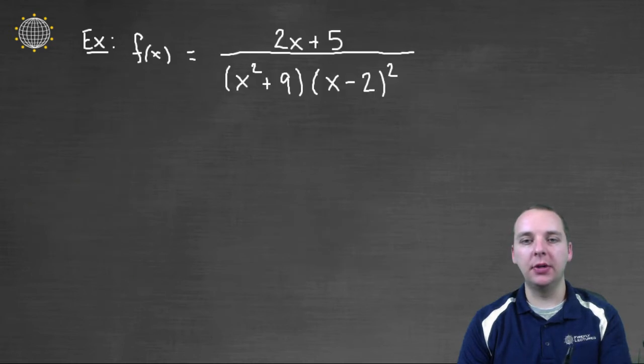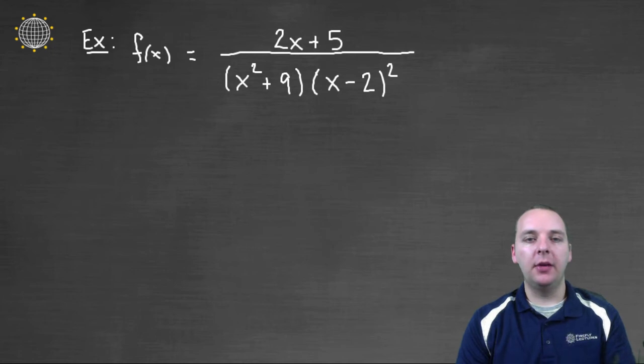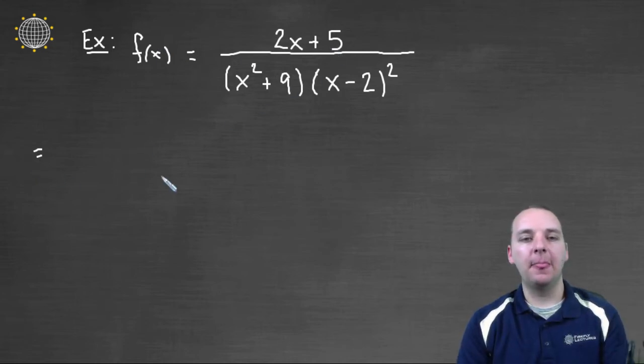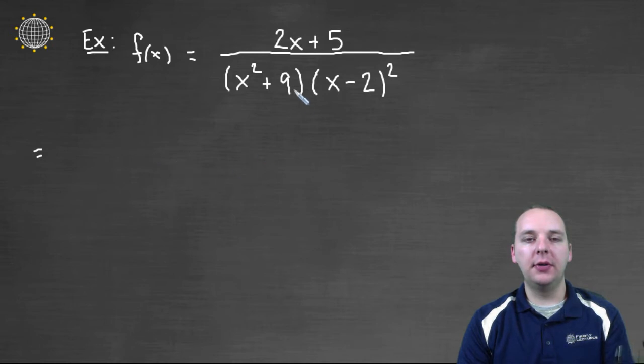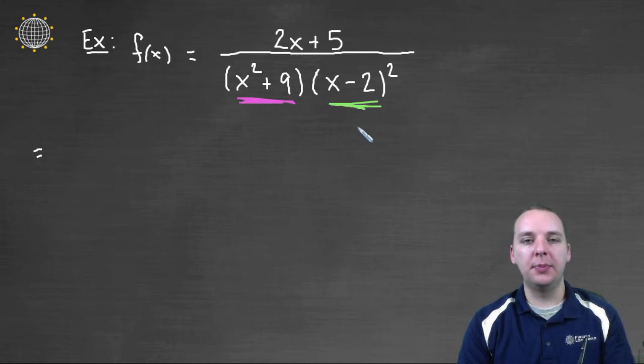Alright, so let's try one. Let's see if we can do this. Okay, so here's a rational function, and we're going to try to decompose it. And so the main step, the big step, is writing the template of what this decomposition would look like. So f of x is this, and I'm going to decompose it in the next line. I'm going to have a few different terms based off of what these factors look like in the denominator. I've got this factor in pink, and I've got this factor in green, and I'll do them separately.